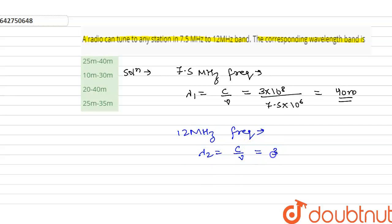Which is equal to 3 into 10 raised to the power 8 divided by 12 into 10 raised to the power 6. So on solving it will give 25 meter.